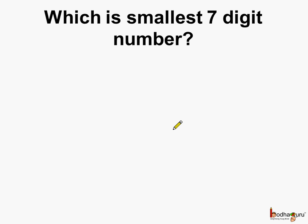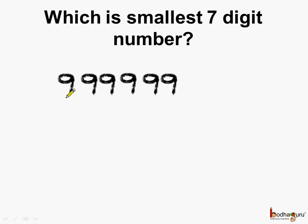Now, which is the smallest 7-digit number? We can get it by adding 1 to the greatest 6-digit number. So let's do it. We have here 6 times 9 and how do we read it? It is 9,99,999.